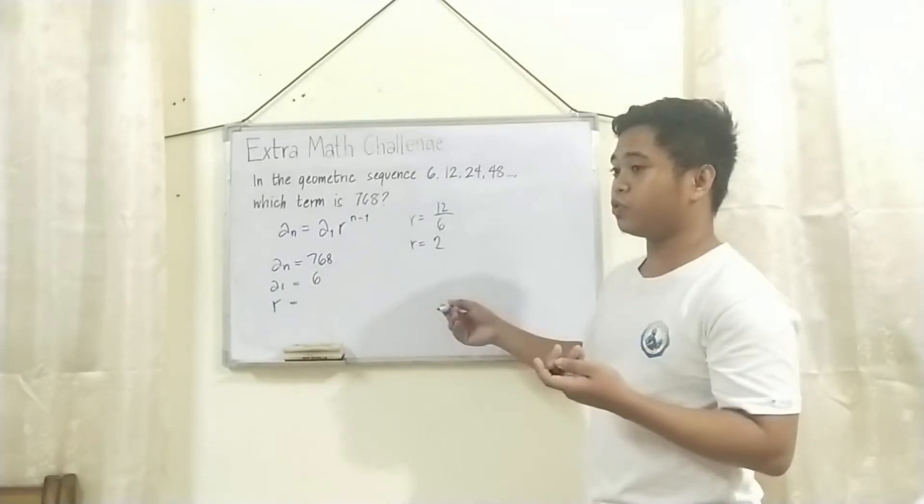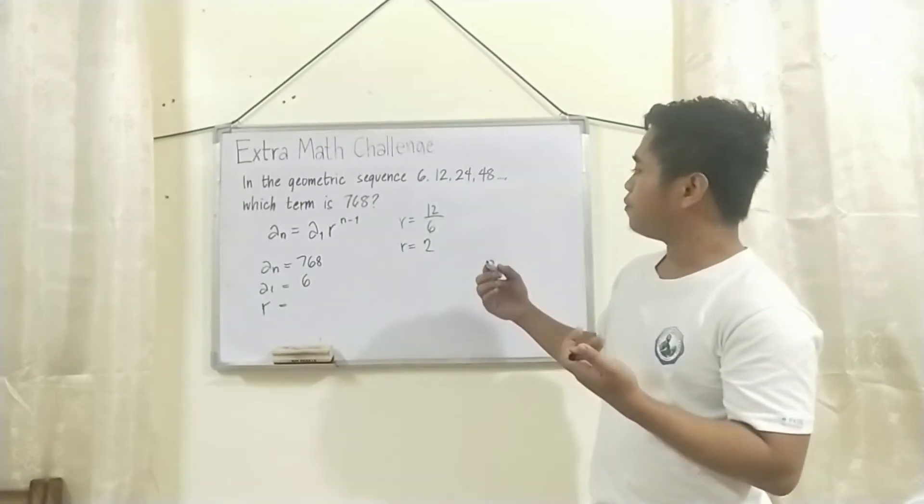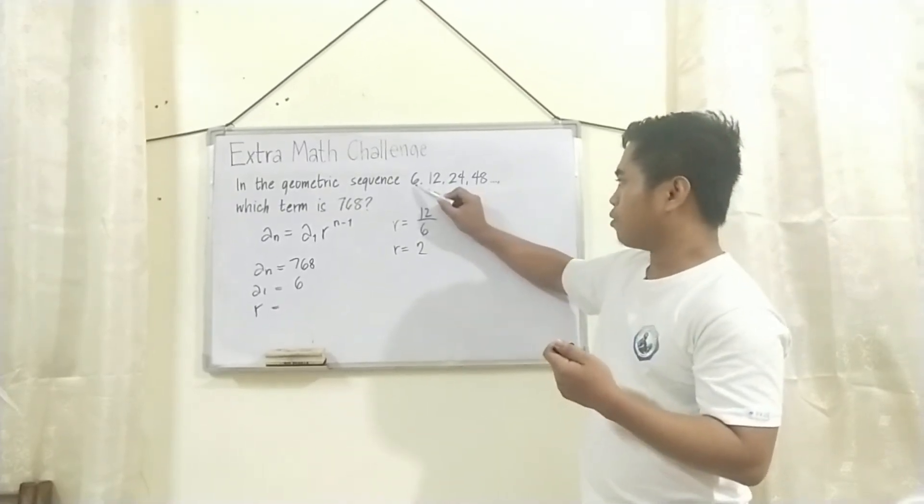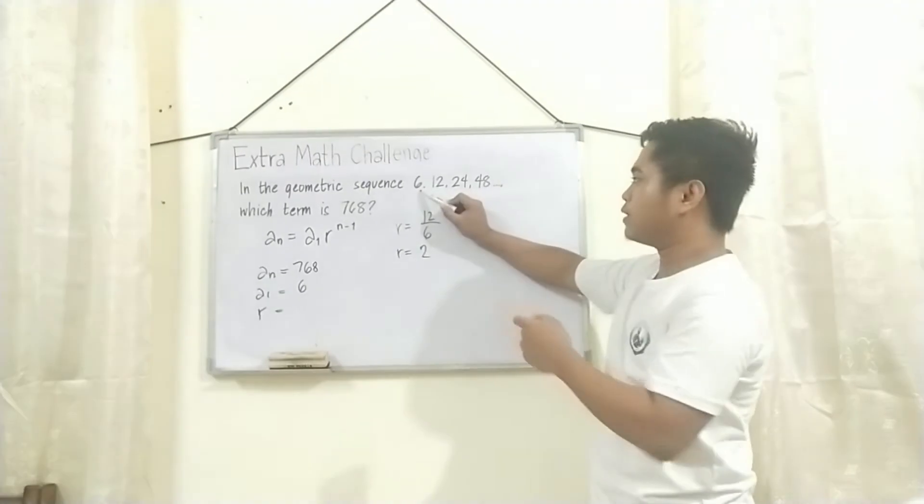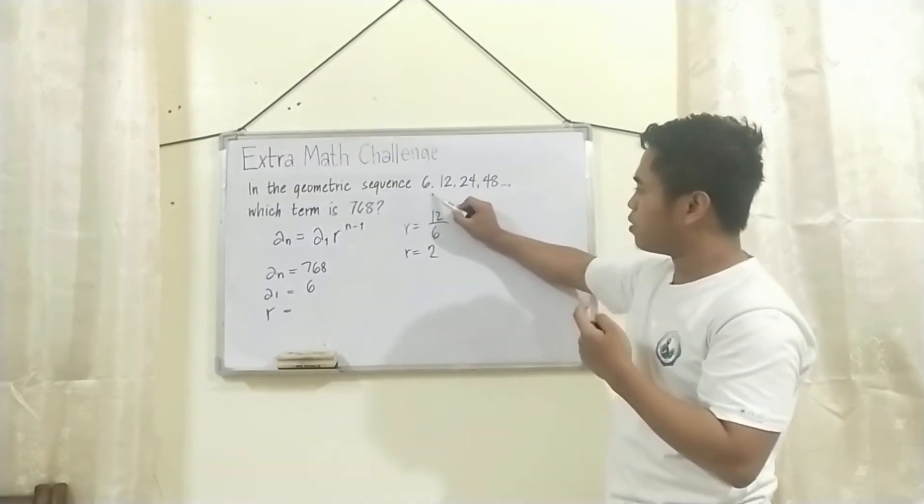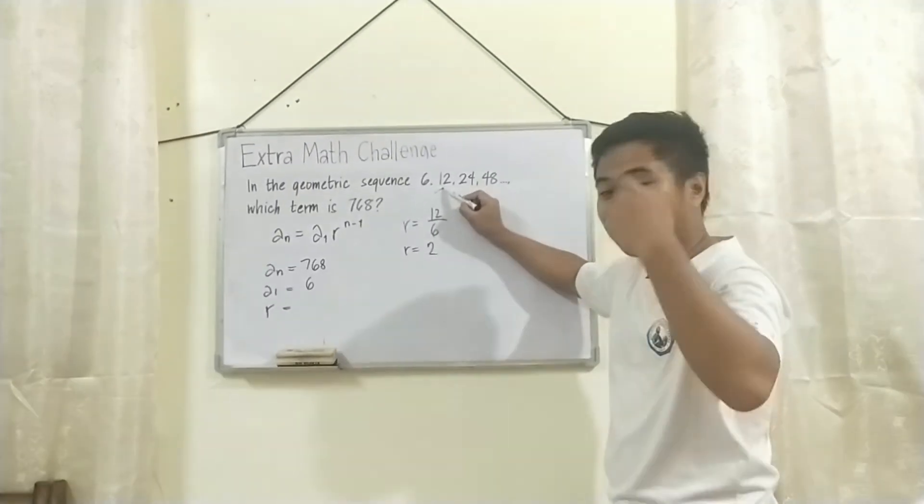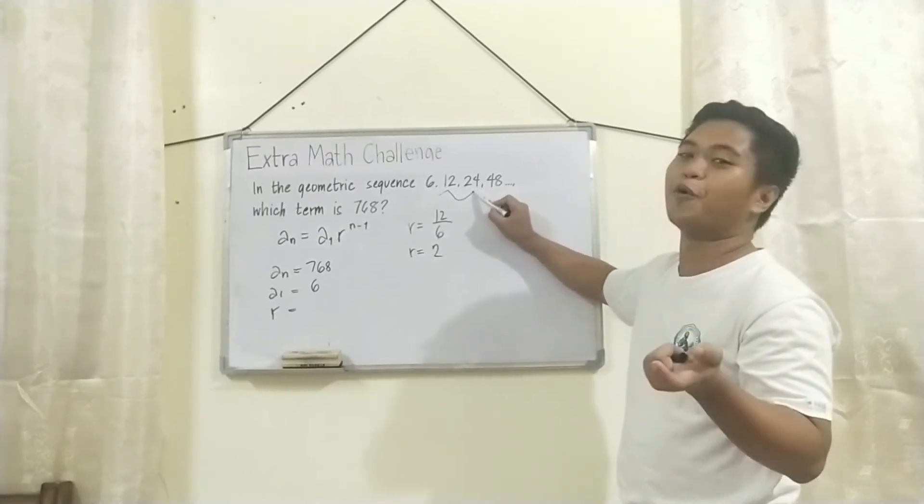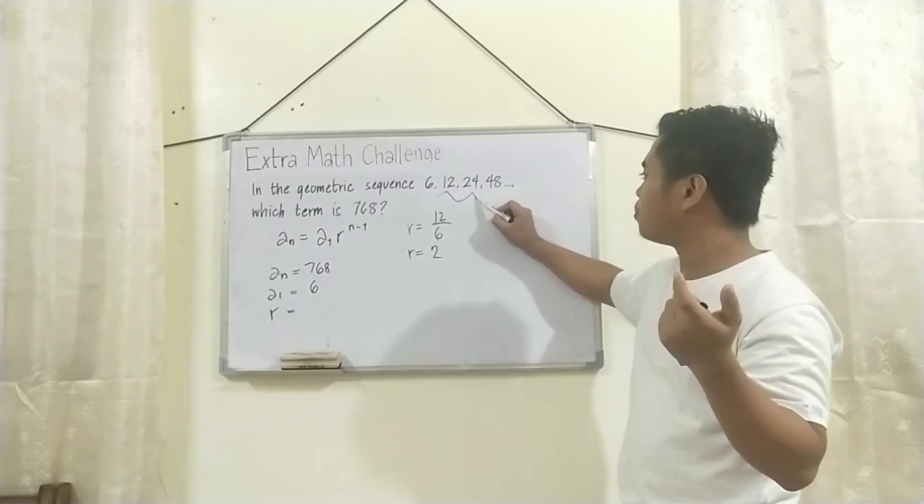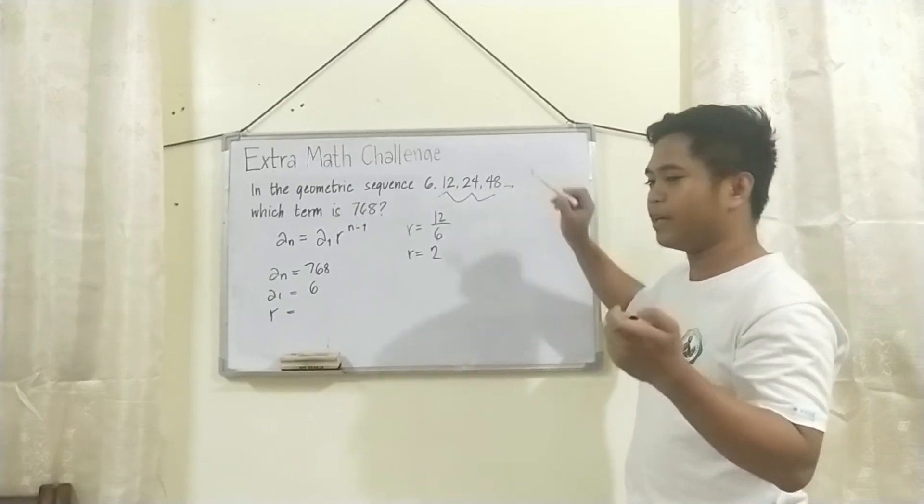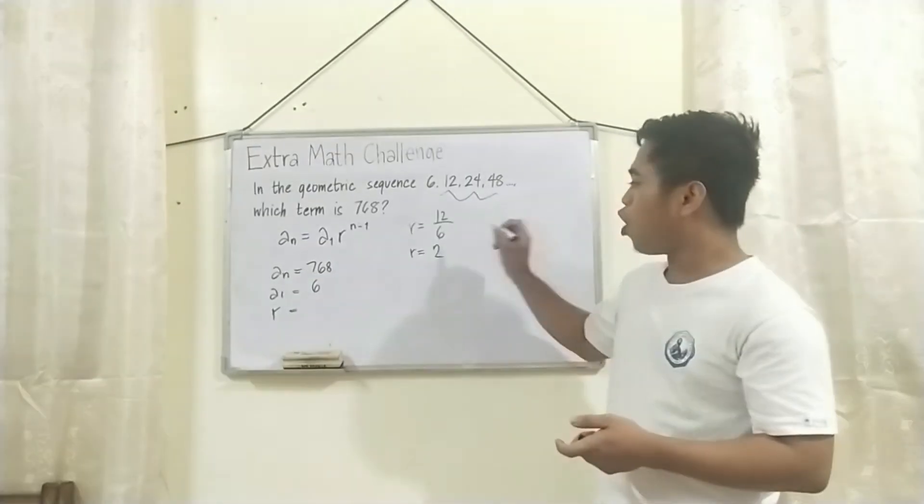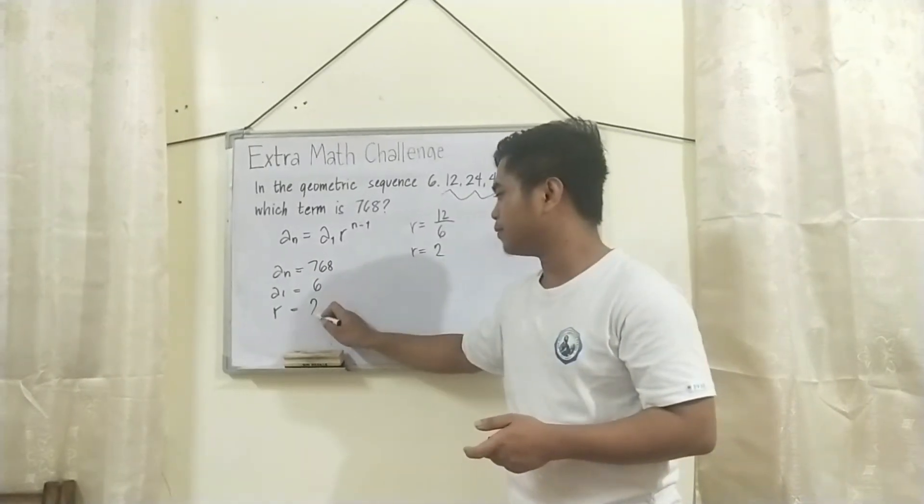To check if yan ba yung common ratio talaga, we'll have 2. Multiply this 2 by 6, or multiply 6 by 2, then we'll have 12. Then multiply 12 by 2, then we'll reach 24. And then multiply 24 by 2, then we'll reach 48, and so on. That's why yung common ratio natin dito is 2.